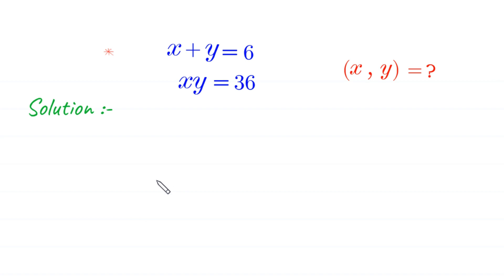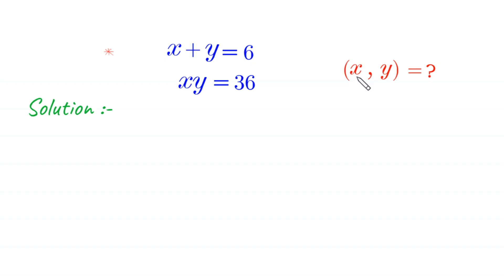Hello everyone, you are welcome to how to solve this very nice system of equations: x plus y is equal to 6, and x times y is equal to 36. Our job is to find the value of x and y. So, let's start.